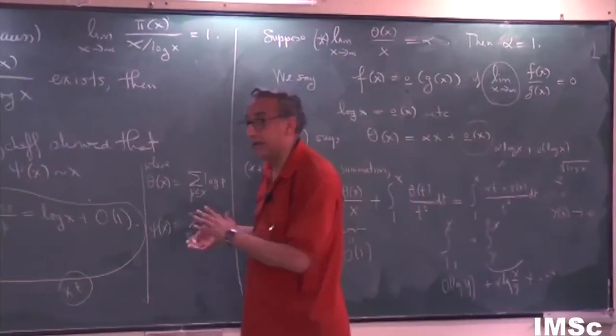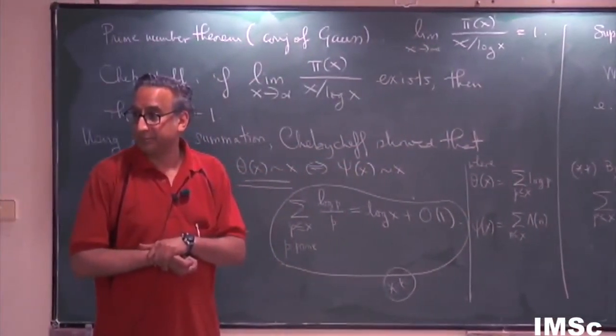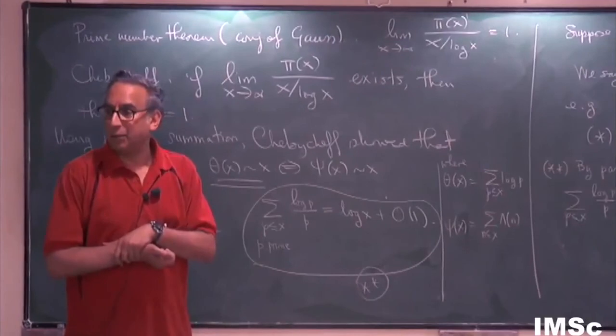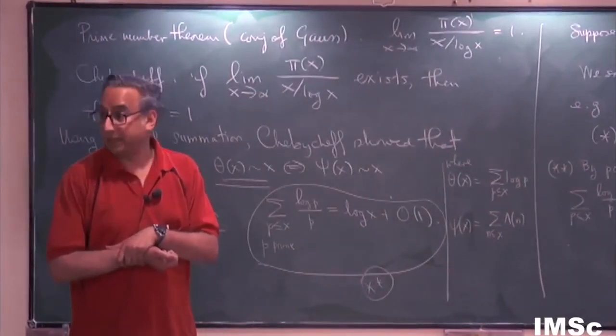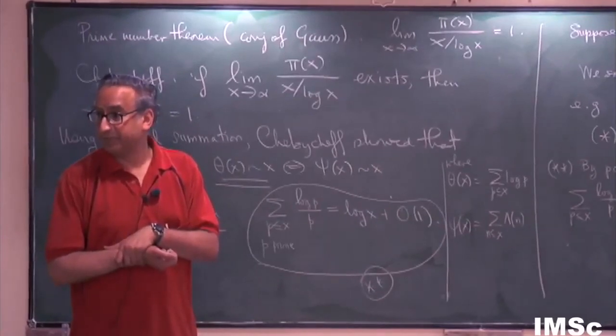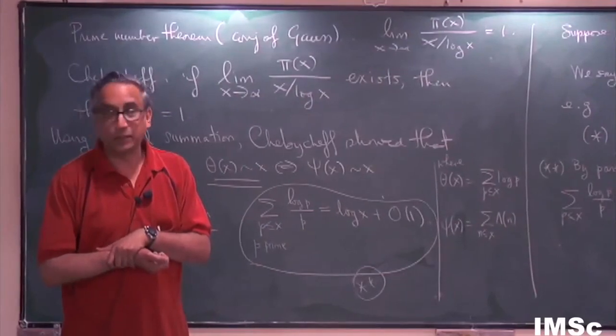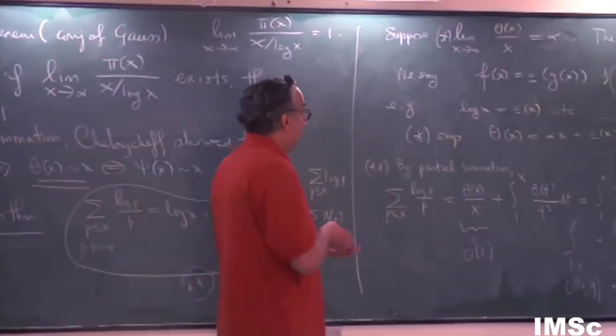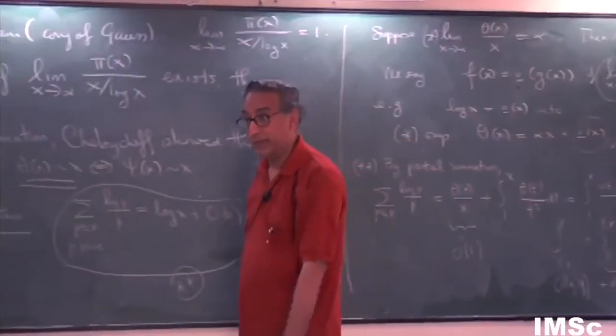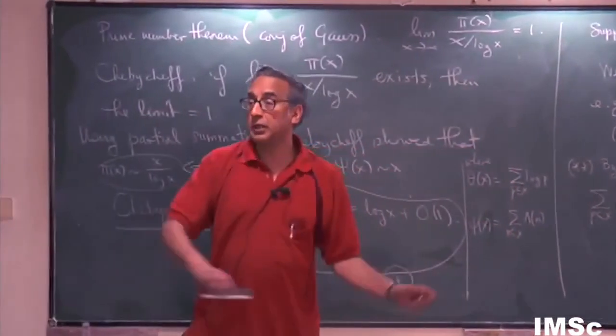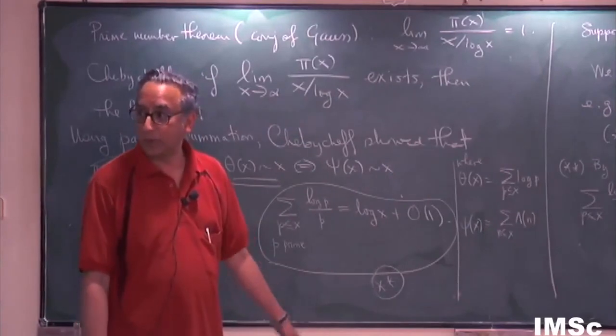That's the proof of Chebyshev's theorem that says if the limit exists, it has to be one. So the whole business of the proof of the prime number theorem is now reduced to showing the existence of the limit. And you may wonder, how could that be so hard? And it is. That's where the hard part is. So sometimes very simple things can be very difficult, simple things stated can be very difficult to prove. So are there any questions about what I said so far? Looks okay?